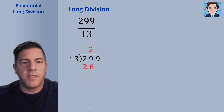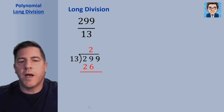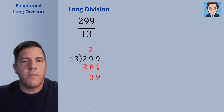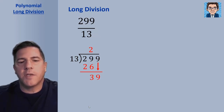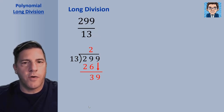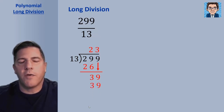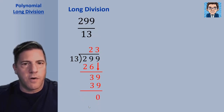The next step is to subtract. 29 minus 26 is 3, and then we bring down the next number. We're going to bring down the 9 to make a 39 on the bottom, and then we repeat this step. How many times does 13 go into 39? That goes in three times. Multiply 3 times 13 and get 39. Subtract again, and we get a remainder of zero.